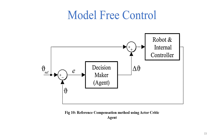We now move to model-free control methods that do not utilize the arm's dynamic model in any form. The first method uses a reinforcement learning agent in a scheme called the reference compensation technique. Instead of sending the reference signal directly to the robot's internal actuator controllers, we add a correction term to the reference signal to compensate for dynamic effects. The RL agent learns this correction through experience, using only the error between the measured and reference joint values.